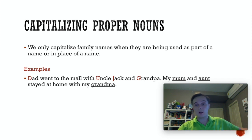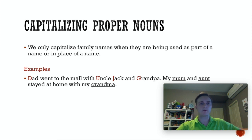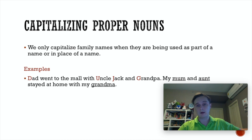When you are using family names, you only capitalise them when they're being used in place of a name, not when we're just saying what that family name is to describe a relationship. So 'Dad went to the mall with Uncle Jack and Grandpa' — Dad, Uncle Jack, and Grandpa are being used as names. But 'My mum and aunt stayed at home with my grandma' — I'm not using them instead of a name, I'm just describing the relationship, so they don't need to be capitalised.